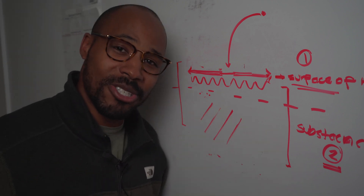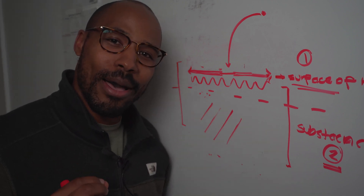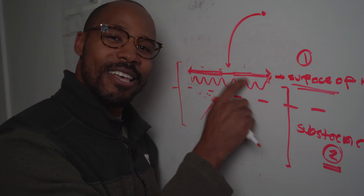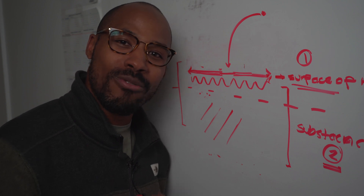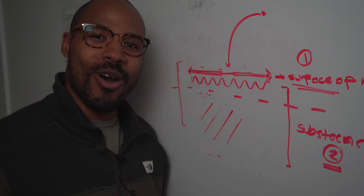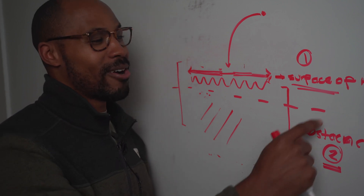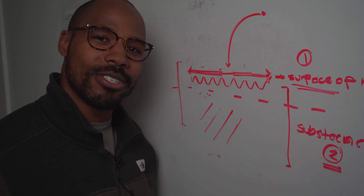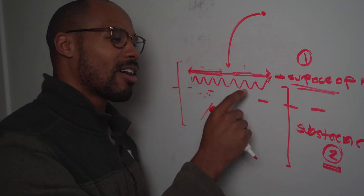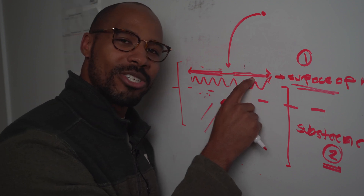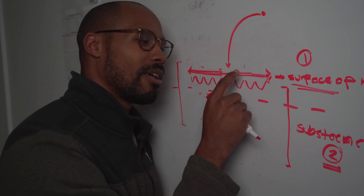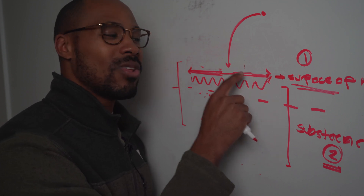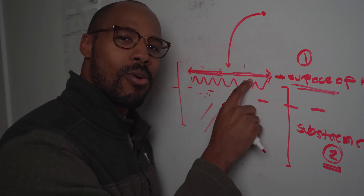So to answer the question: the reason why a belly flop hurts so bad is because the surface of the water is actually rigid. And the surface of the water is rigid because there is surface tension due to intermolecular forces that only occur in a specific pattern — horizontally and downward — only at the top of the water.